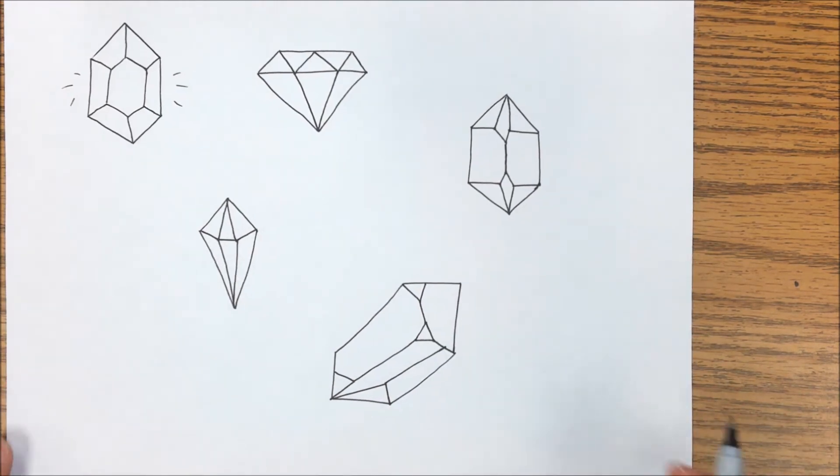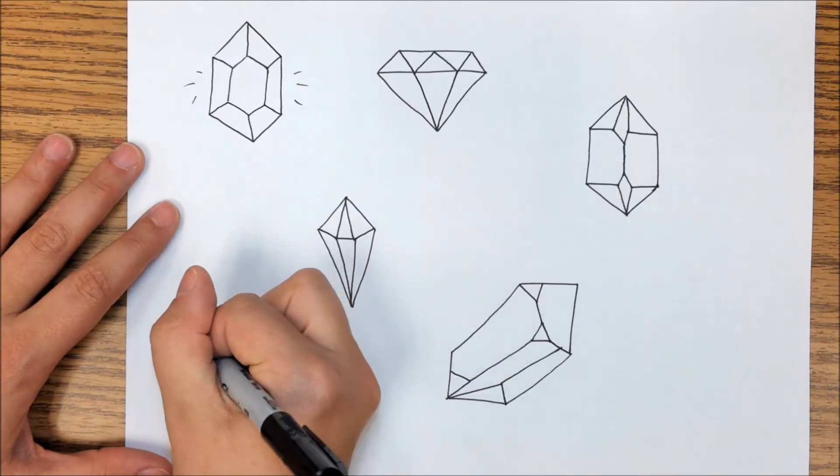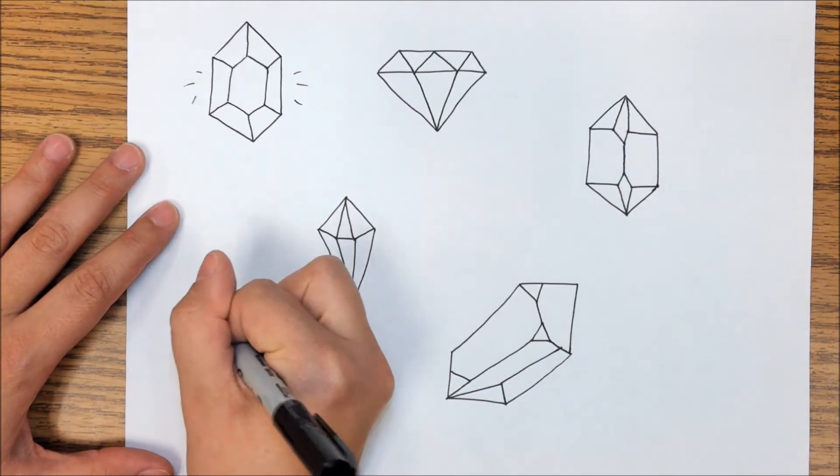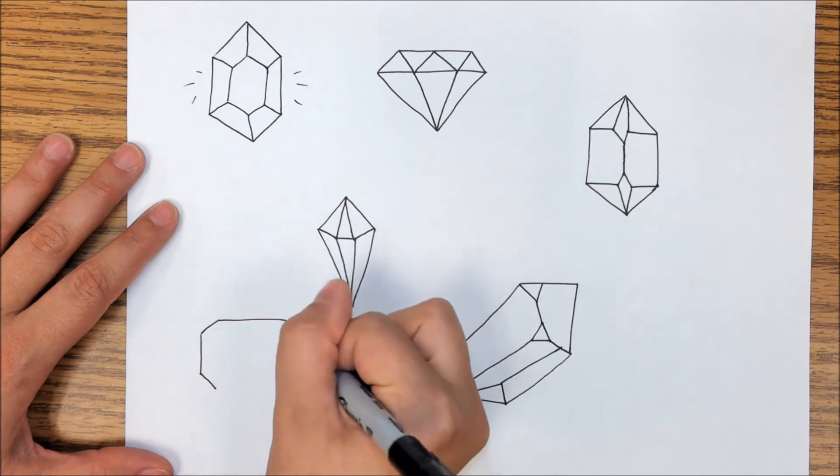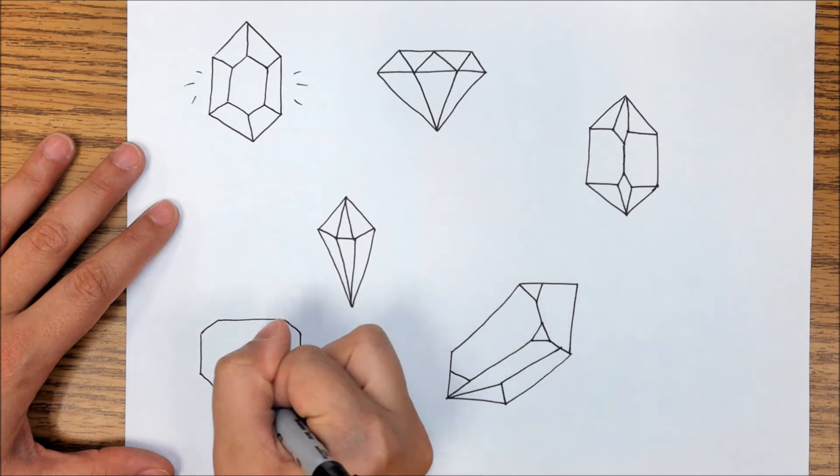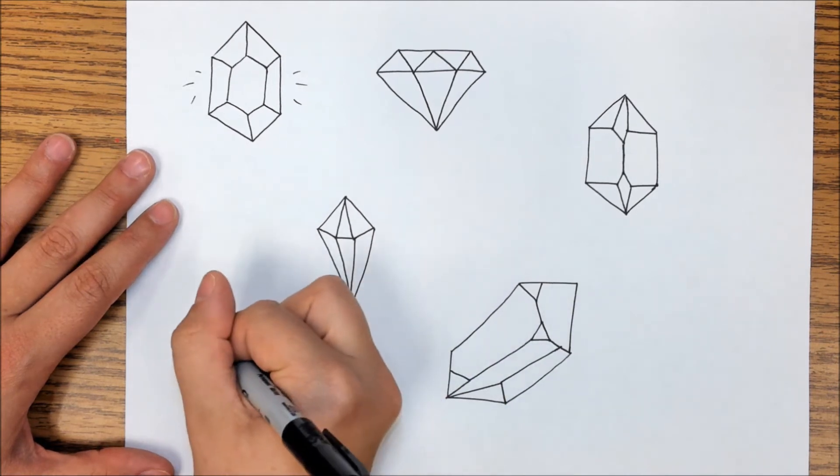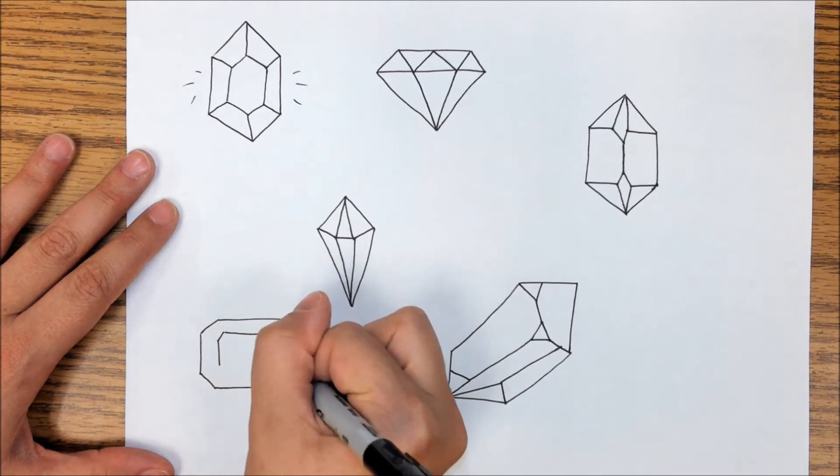So lots of different ways you guys can draw these, lots of different styles to do. This one I'm going to start with an octagon shape, so eight sides.